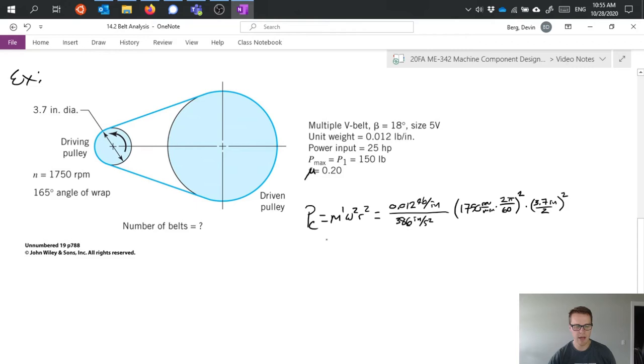Doing that calculation then we come up with 3.57 pounds of tension due to just the rotational velocity.